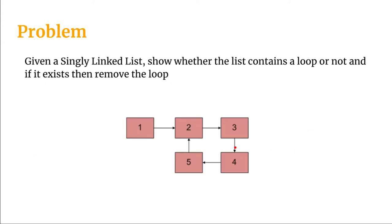Going back to the diagram: when slow and fast are equal at node 5, we keep fast there and reassign slow to head, so slow is at 1 and fast is at 5. We check if slow.next equals fast.next — next of 1 is 2, and next of 5 is also 2. Since they are equal, the loop is not entered. We then set fast.next to null, breaking the link from 5 to 2. The result is a singly linked list 1, 2, 3, 4, 5 without a loop.